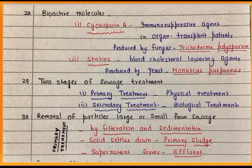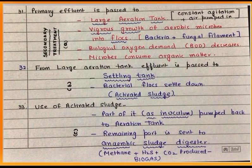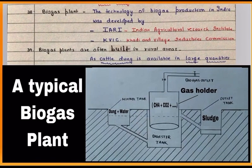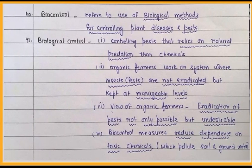Microbes also play an important role in the treatment of sewage. These are the steps during secondary treatment of sewage, where aerobic and anaerobic microbes are used. Methanogens help in preparing biogas, and biogas plants are often built in rural areas.